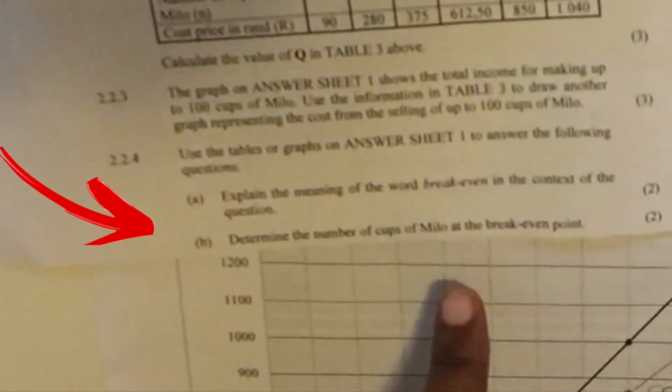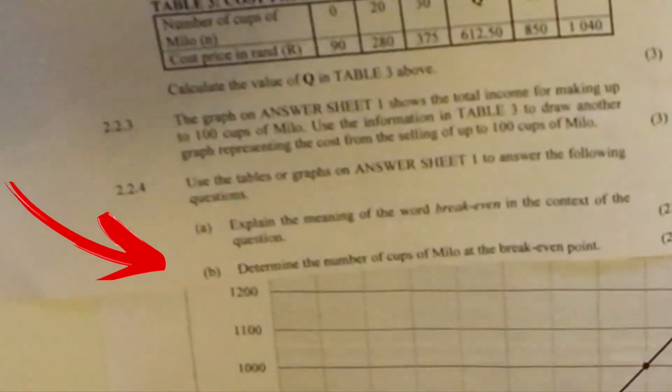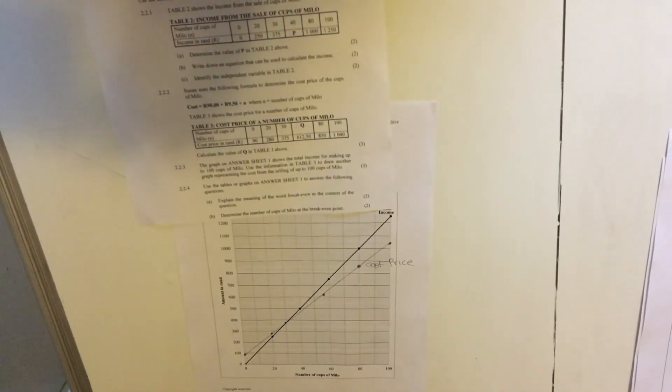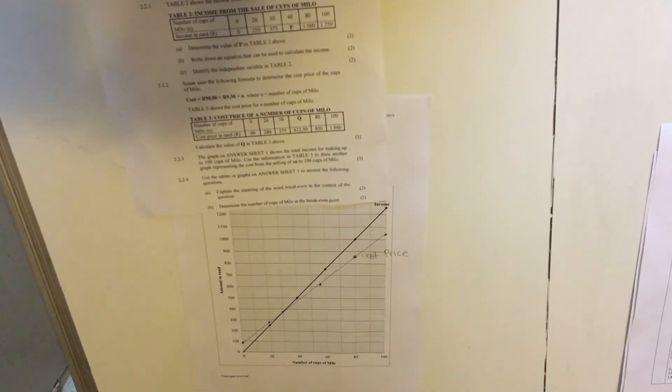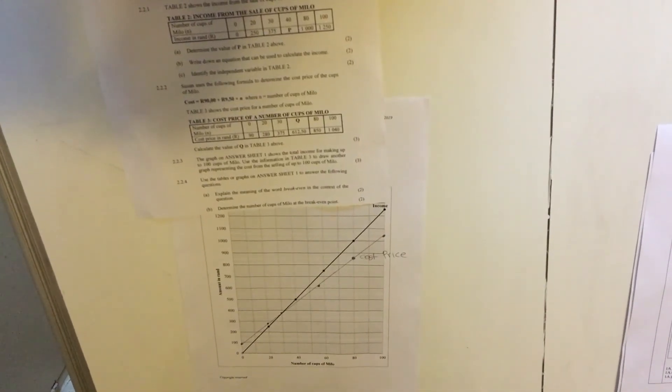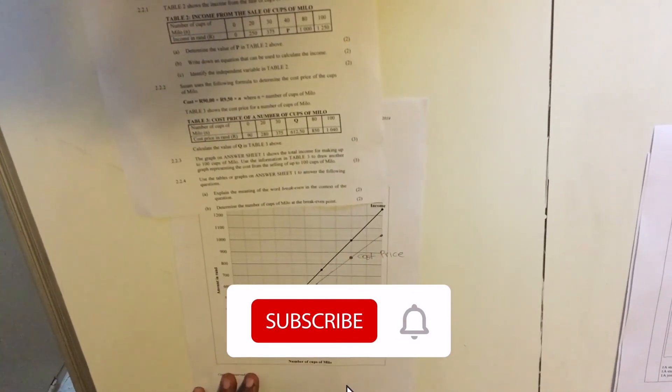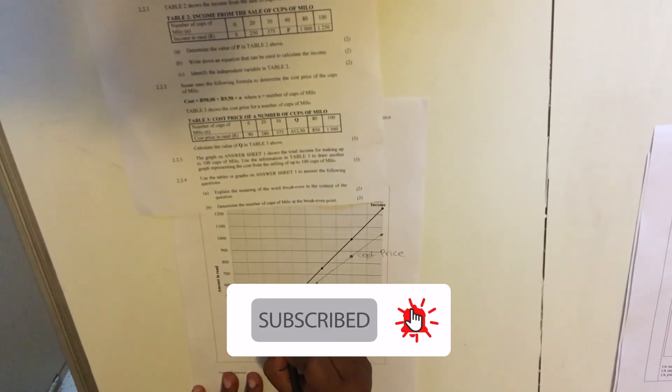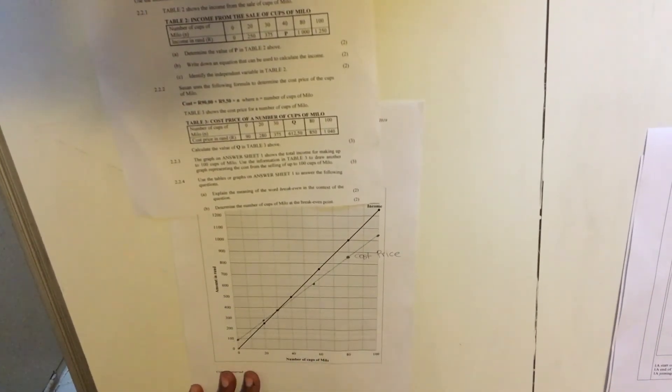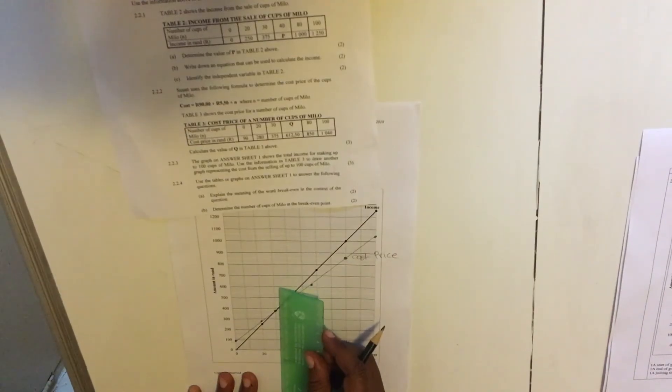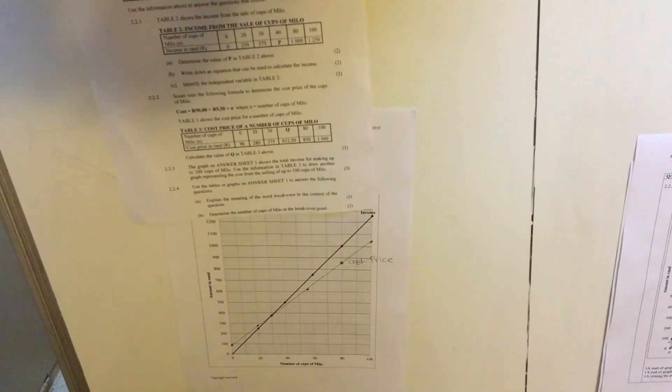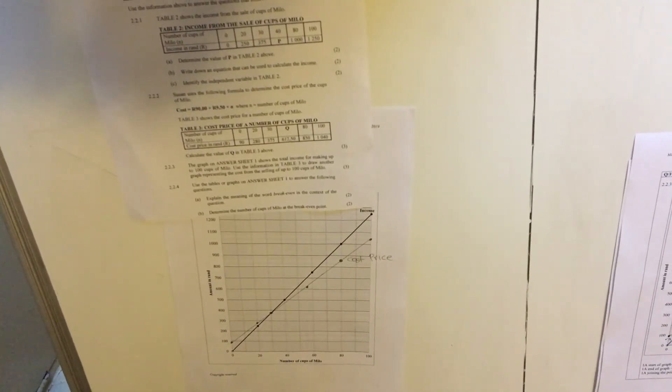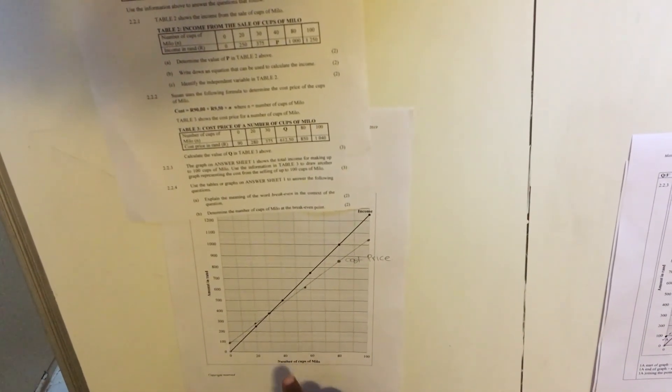Okay. The last question, determine the number of cups of milo at the break even point. Okay. At the break even point, if you're looking at a graph, it's where the income graph intersect or meet the cost price graph. So they want the number of cups. So it will be this point here where they intersect or where they meet. Right. At that point, how many cups? So we're going to look at that. It is 30 cups. You see it's between 20 and 40. So your answer there will be 30 cups. The break even point will be 30 cups.